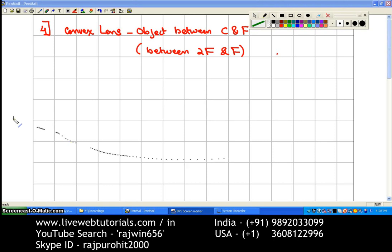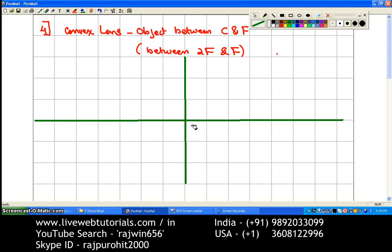The first thing we're going to do is draw the principal axis, and then the lens, the perpendicular line to the principal axis from the optical center.